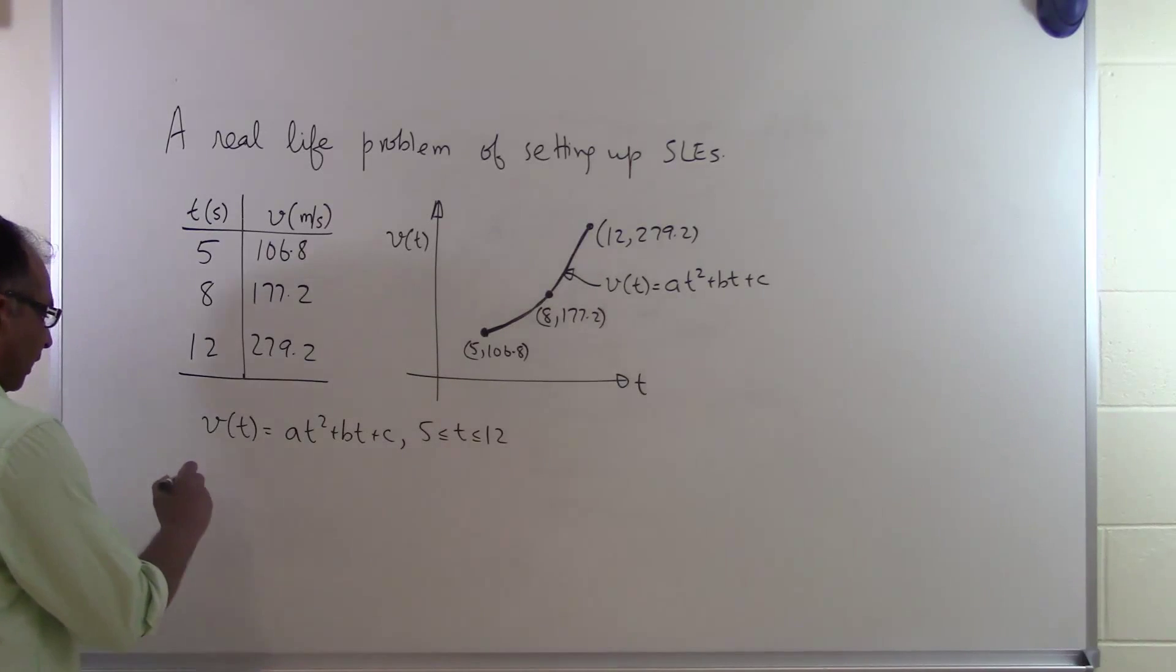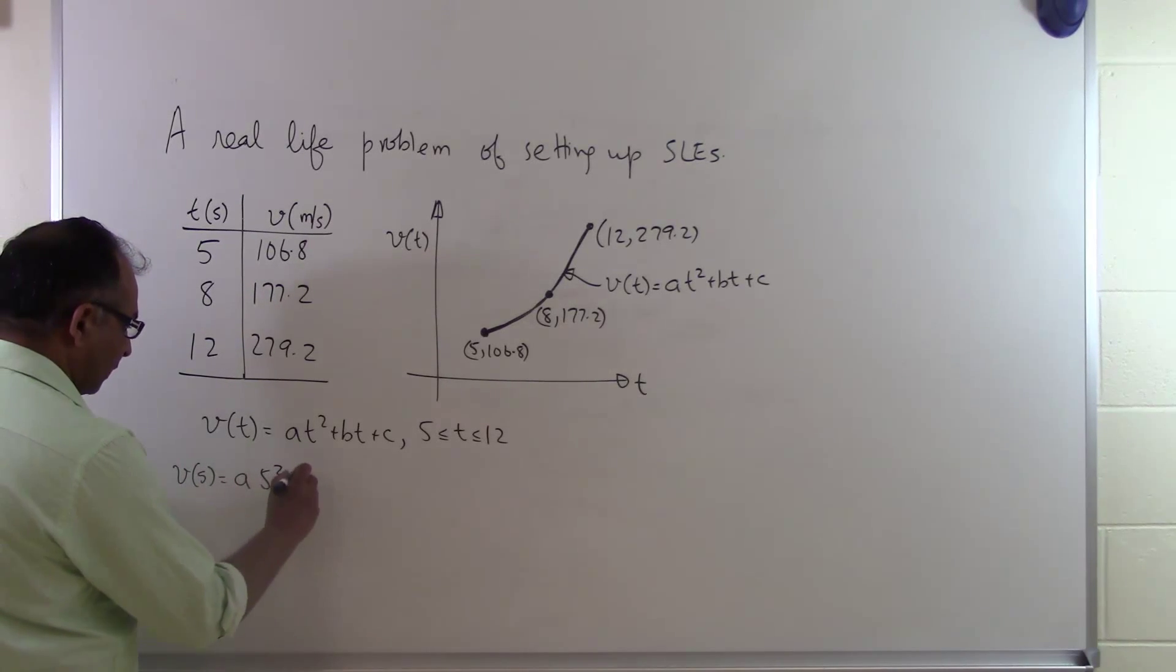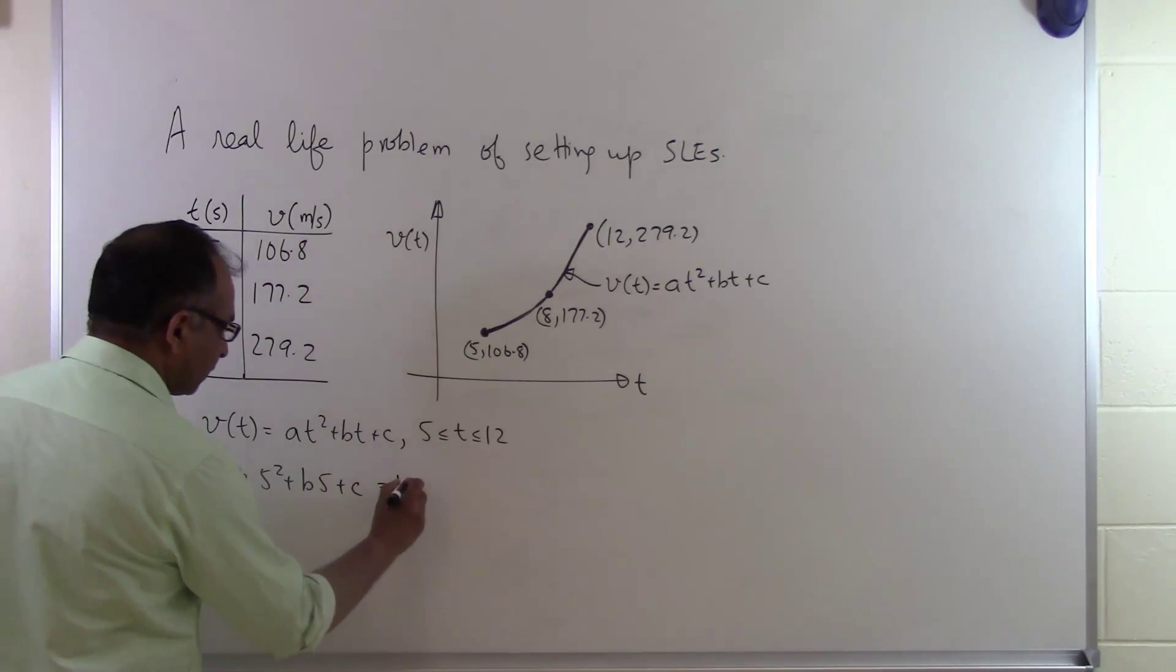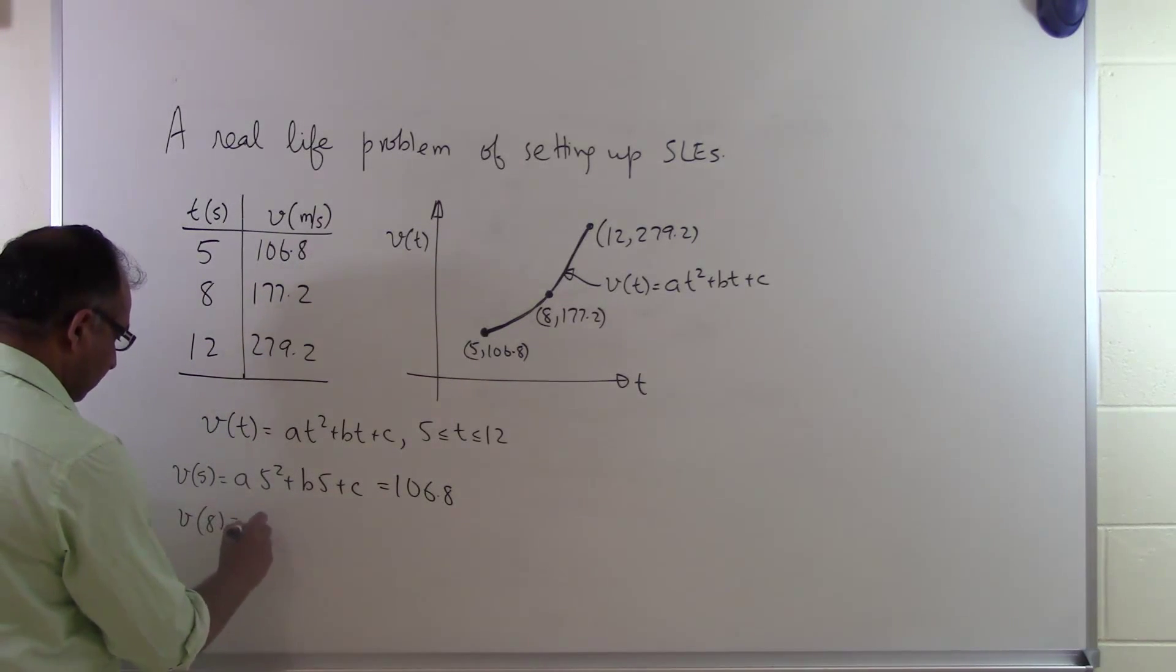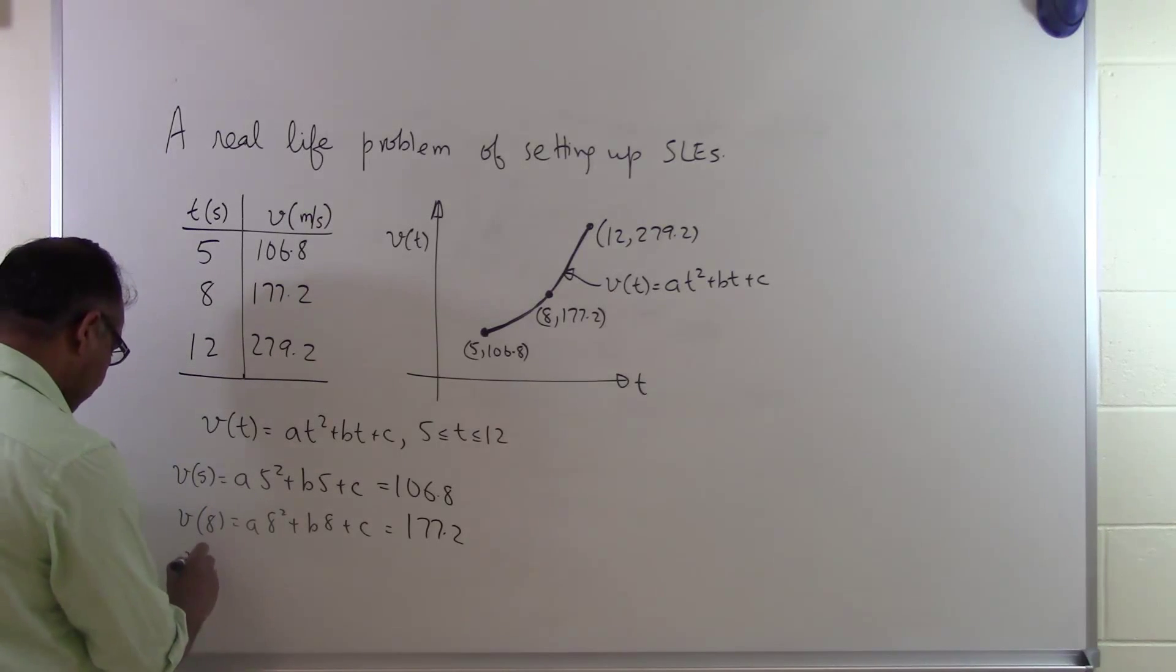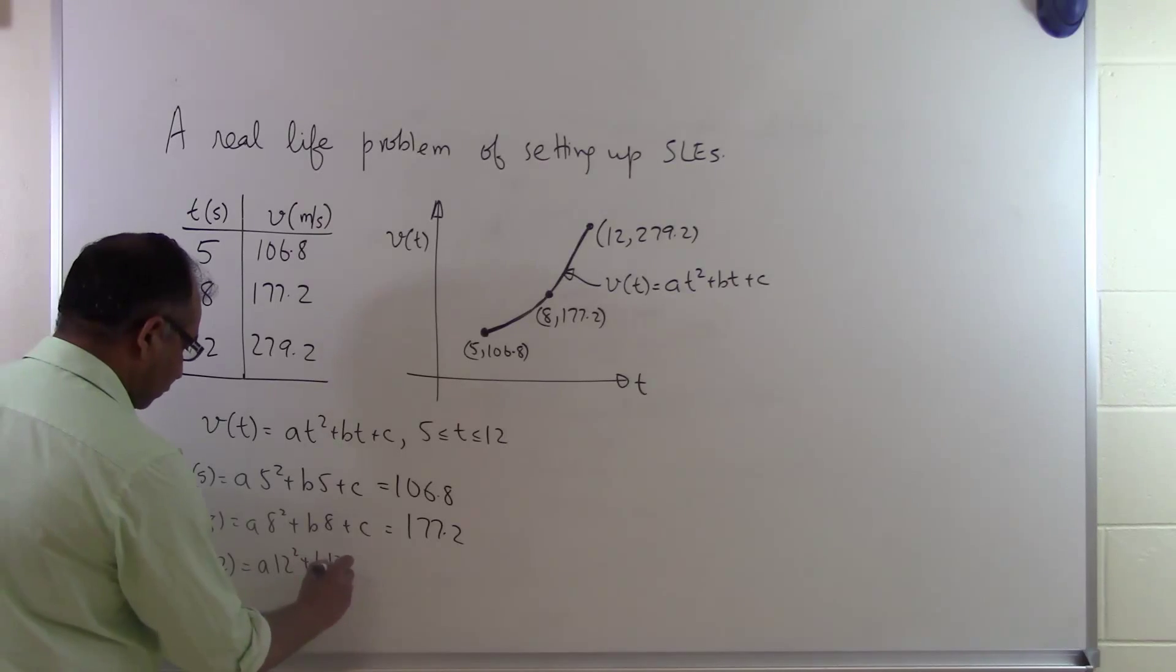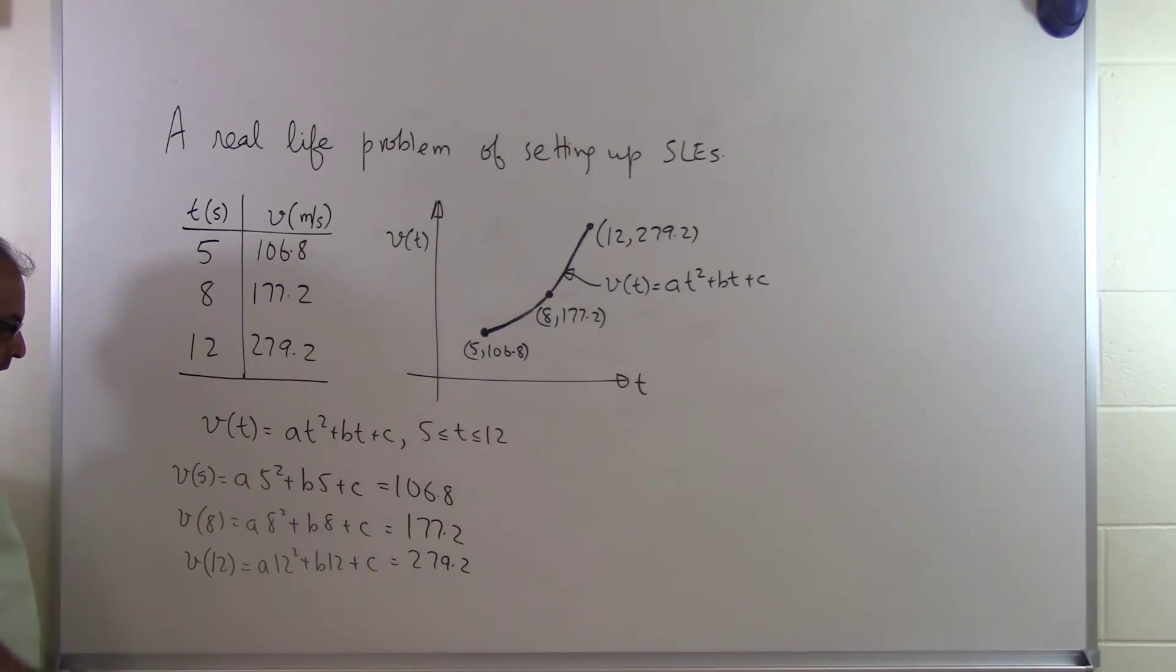If I say the velocity at 5, V(5) = a(5²) + b(5) + c = 106.8. The velocity at 8 is a(8²) + b(8) + c = 177.2. And the velocity at 12 is a(12²) + b(12) + c = 279.2.